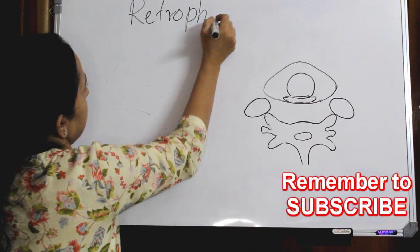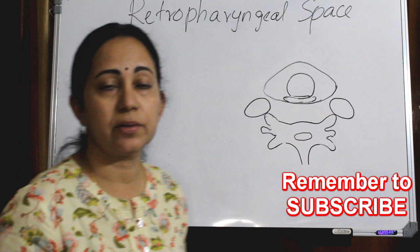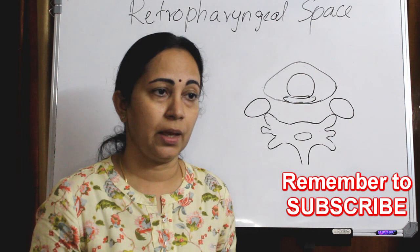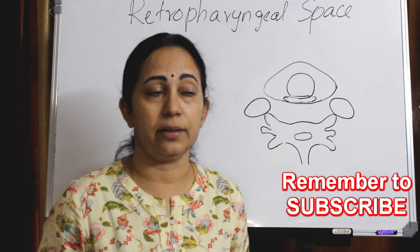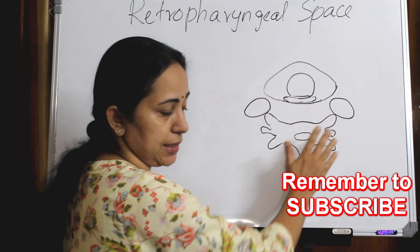The retropharyngeal space is actually a deep neck space which lies between the middle and the deep layer of the deep cervical fascia. As the name signifies, it is retro — meaning behind — the pharyngeal spaces. So it is retro, or behind, the pharynx.